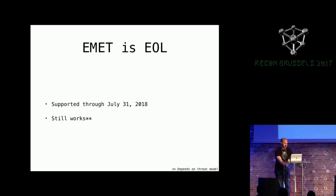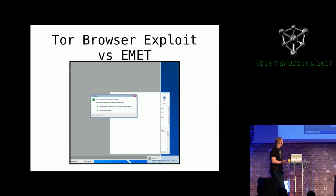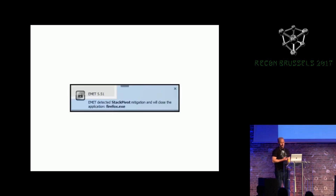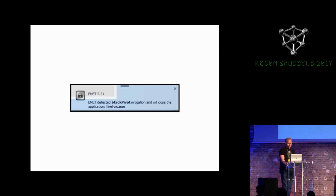EMET is considered end of life — it is going to end July 31st, 2018 — but it still works. It depends on your threat model. This is the recent Tor browser exploit versus EMET: if some of the people doing things they shouldn't have been doing had EMET, they wouldn't have even gotten to the payload, because this is a stack pivot mitigation. They were using a stack pivot to get to the payload. EMET does still work, and it's like the iPhone in your pocket — easy to implement versus Control Flow Guard, where developers have to compile it in.